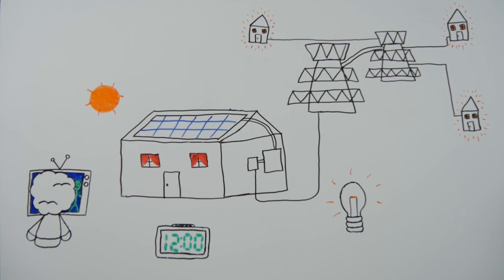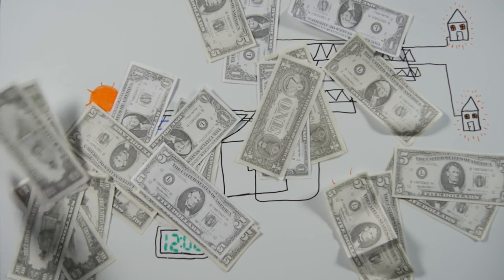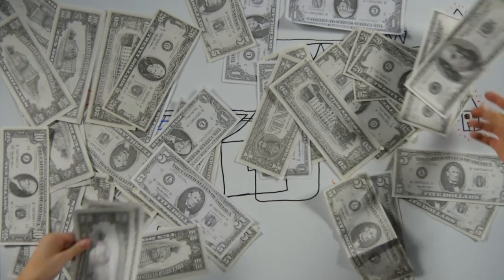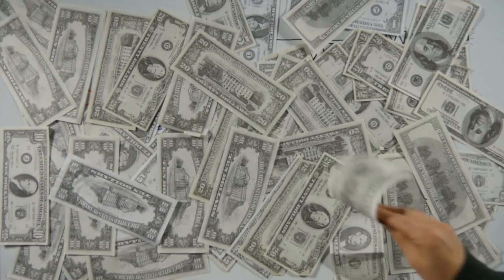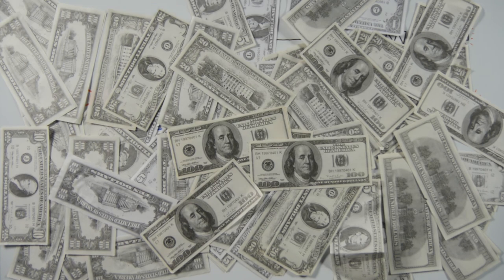To get electricity from the grid, you have to pay for it. However, if you have solar panels and send your extra electricity back to the grid, the power companies will credit you for the electricity you generated but did not use. So by getting solar panels, you could save the Earth and save your money all at the same time.